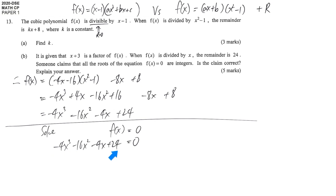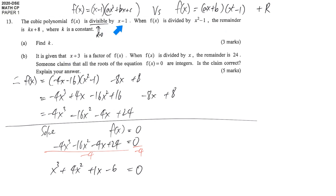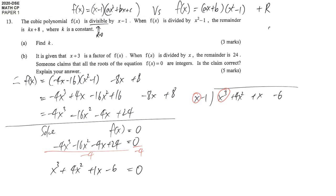All terms are divisible by 4, and since I prefer positive leading coefficients, I divide both sides by negative 4, giving: x³ plus 4x² plus x minus 6 equals 0. Based on the given information, we already know x plus 3 and x minus 1 are factors. I'll perform long division dividing by x minus 1, using the first term: x³ divided by x gives x².